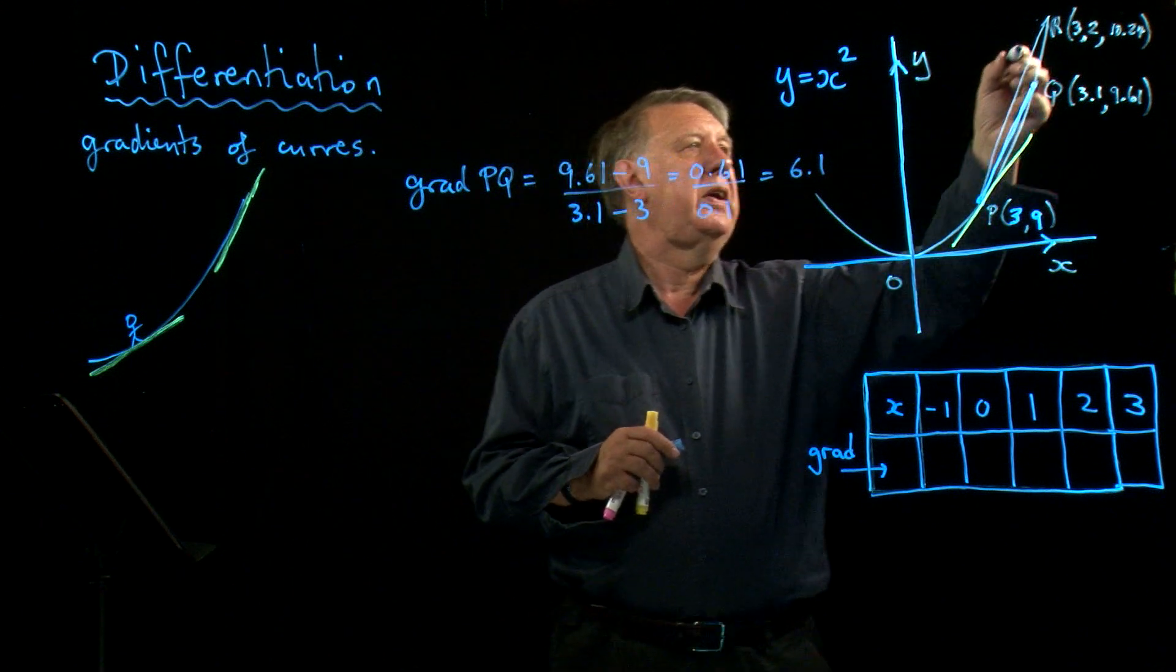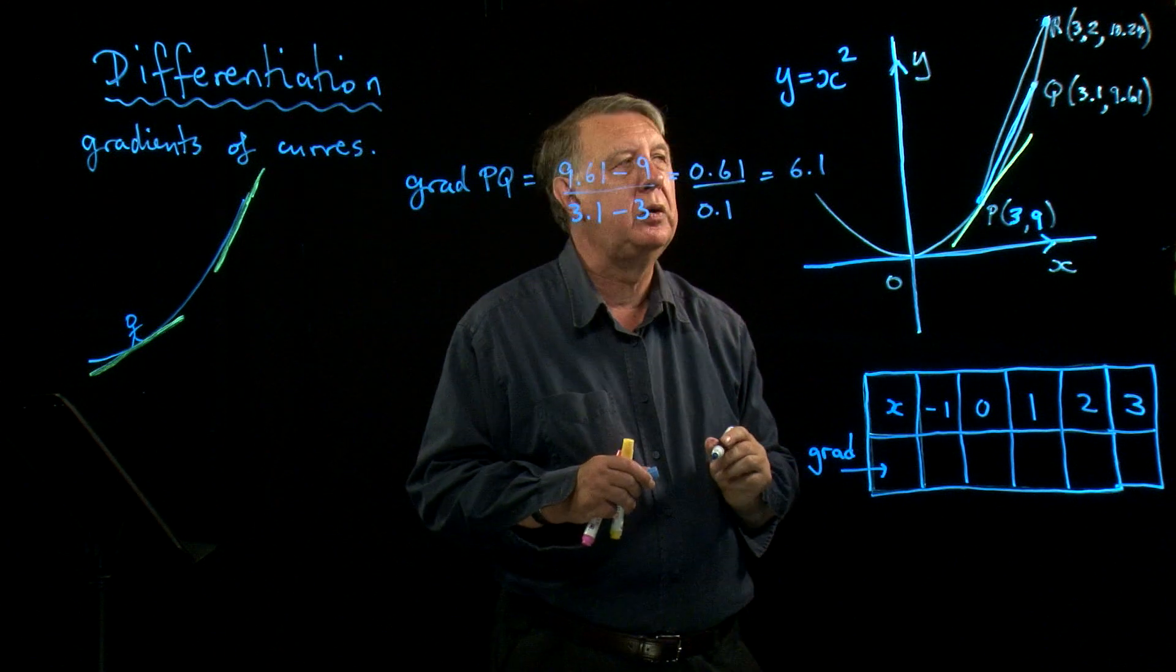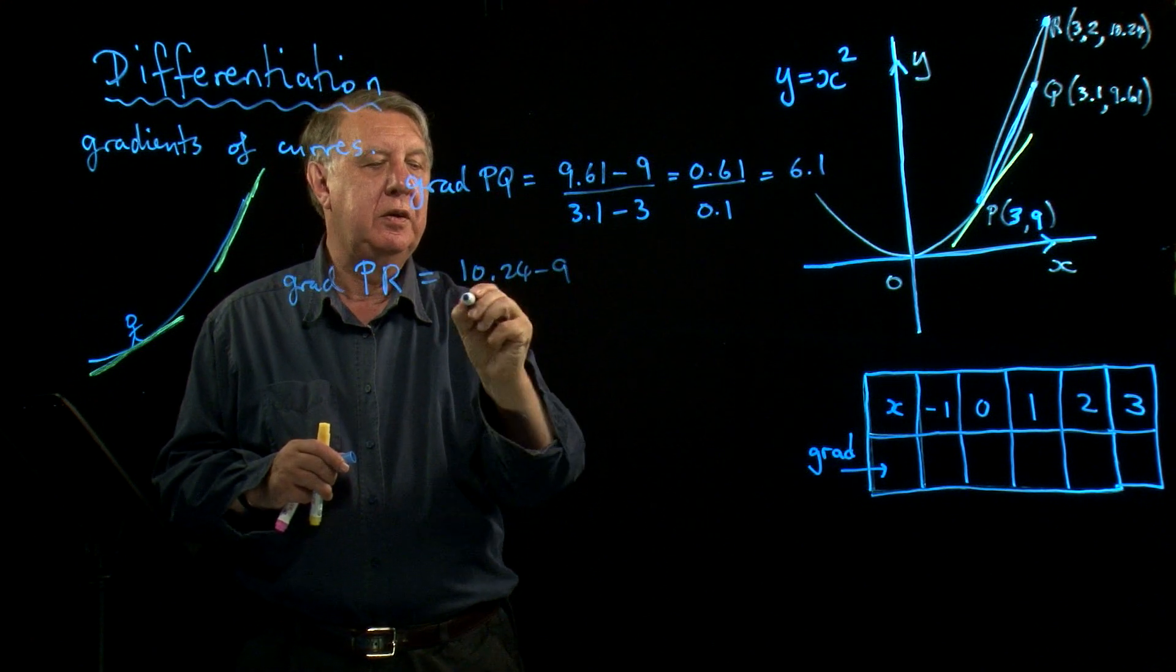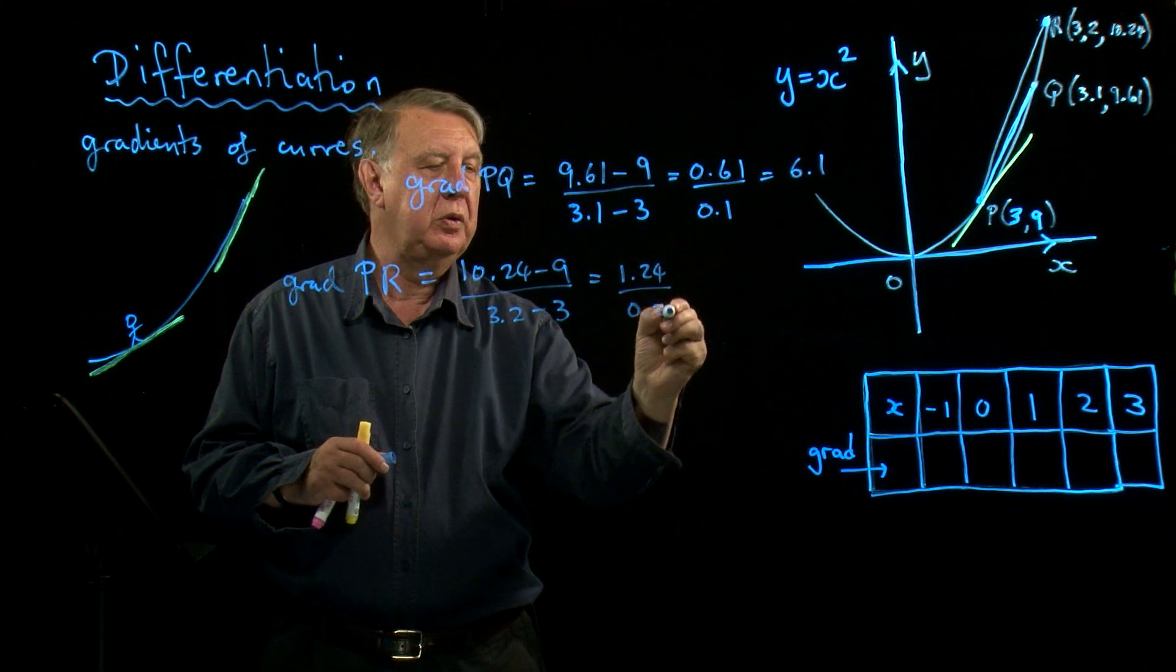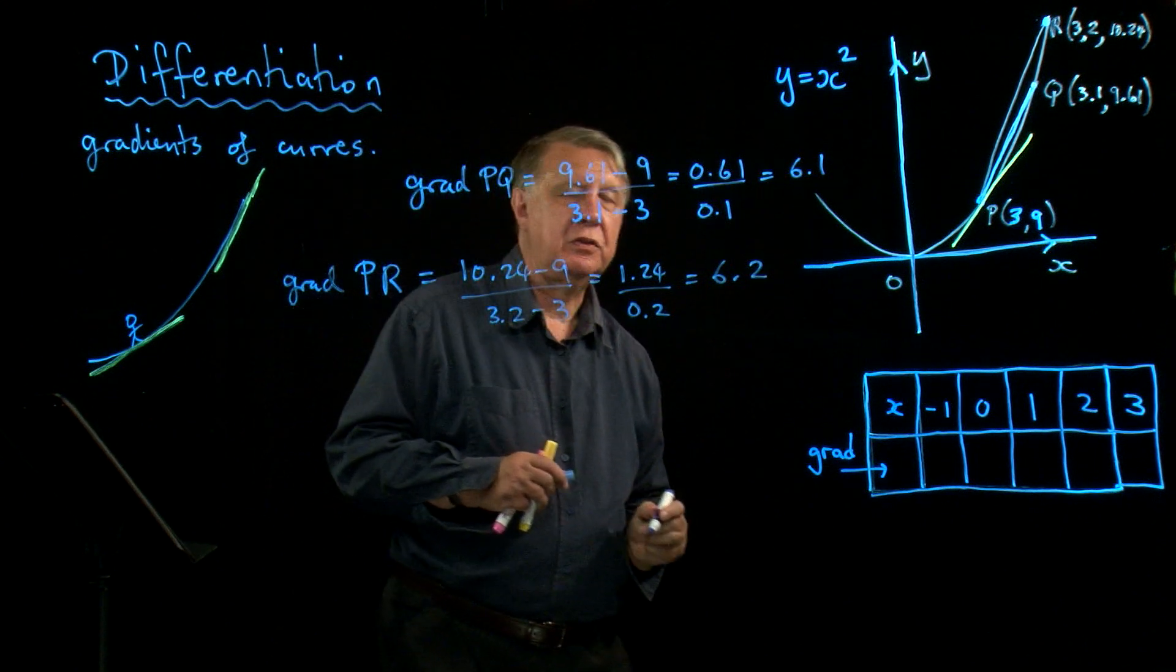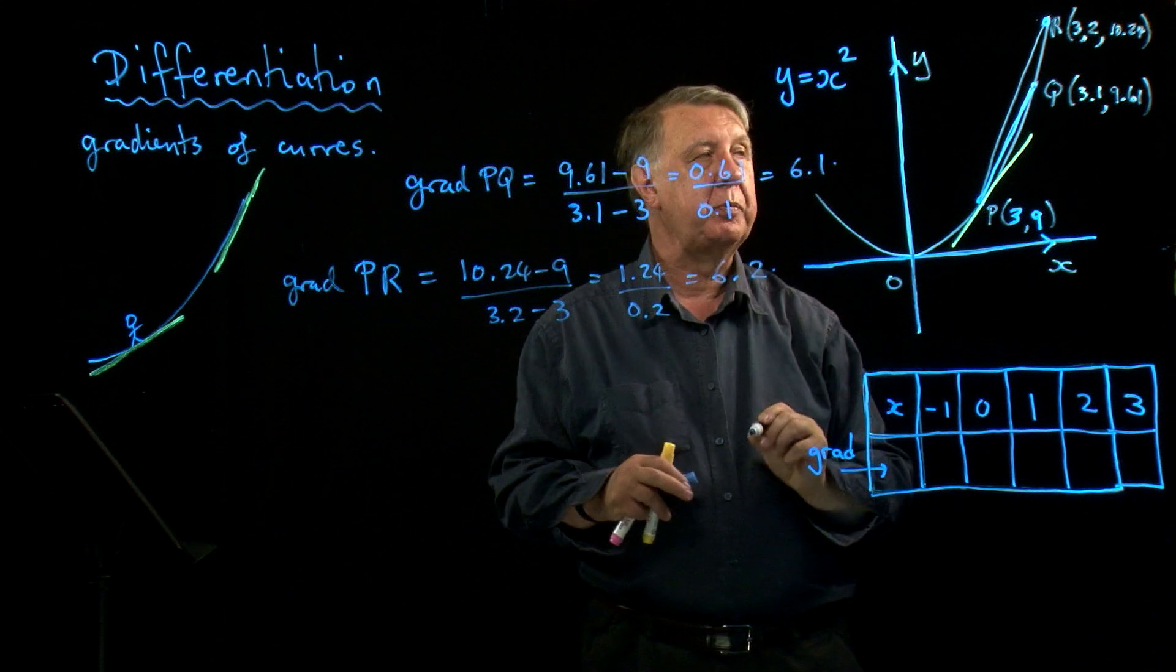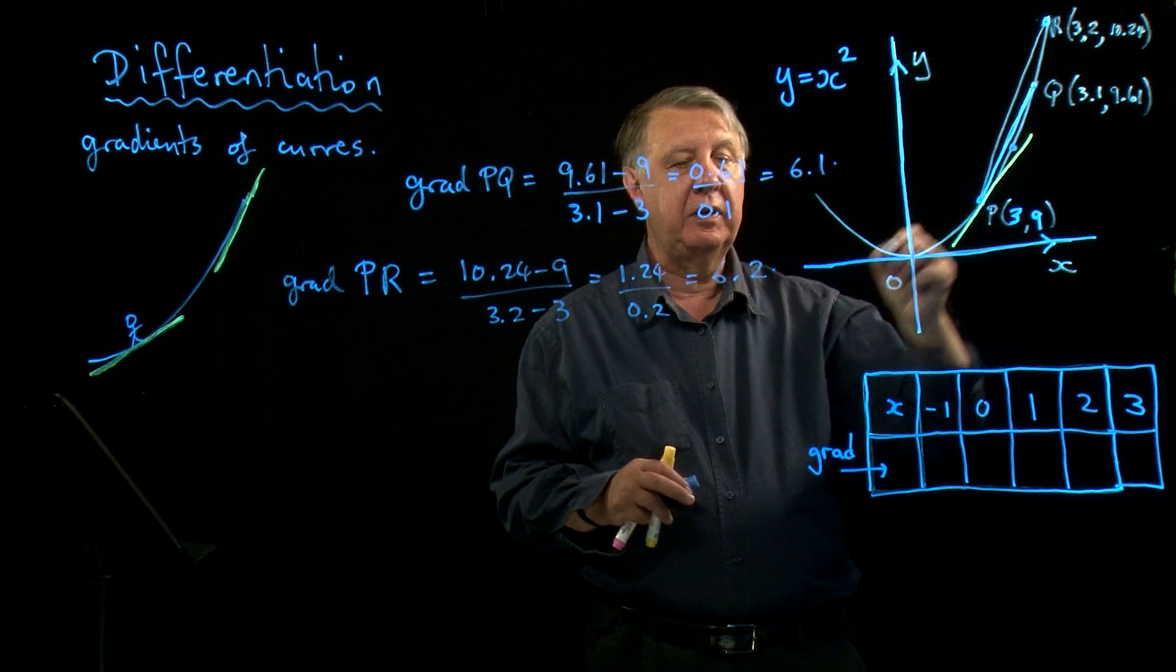So that's 0.61 divided by 0.1, which is 6.1. If I look at this point here, r, a bit further along, x is 3.2. If I square that, you get 10.24. So the gradient of PR will be 10.24 take away 9 over 3.2 take away 3, which is 1.24 over 0.2, which is 6.2. What do I notice? Well I notice that if I start here and I go down to there, the gradient has obviously got smaller. It's gone from 6.2 to 6.1. So if I went a bit further, if I got down to here, the gradient would be less than 6.1.